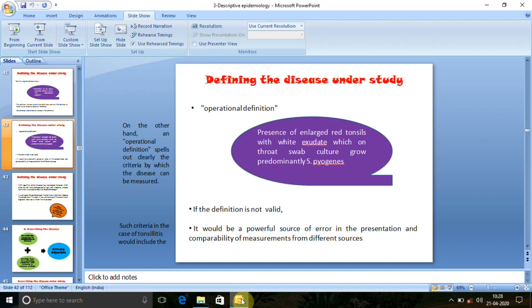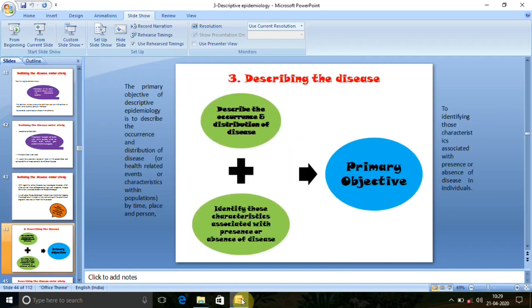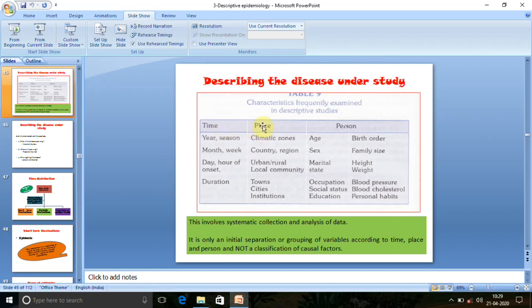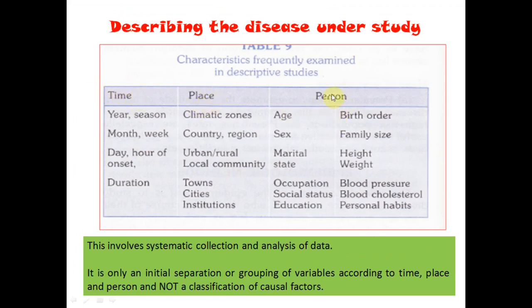The next part is the most crucial part of descriptive study: describing the disease. We need to describe the disease under three headings — time, place, and person. So we commonly ask three questions: When is the disease occurring? Where is it occurring? And who is getting the disease? These three things — time, place, and person (when, where, and who) — are the most important things in descriptive study.